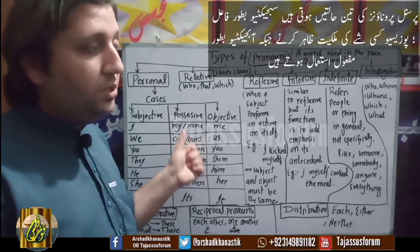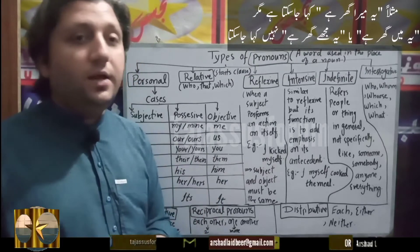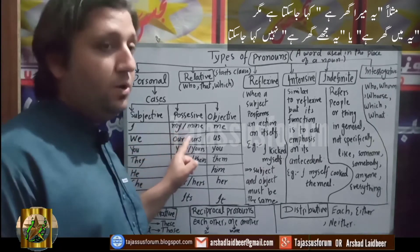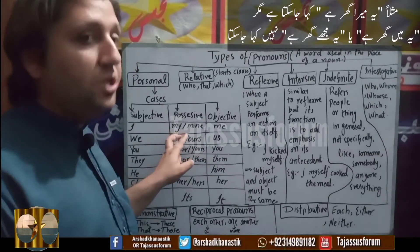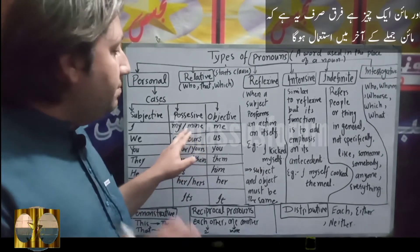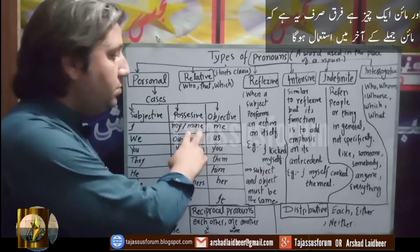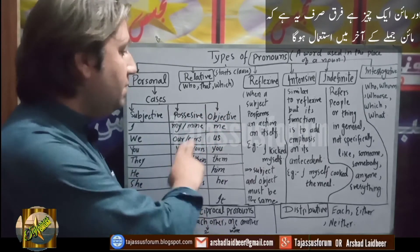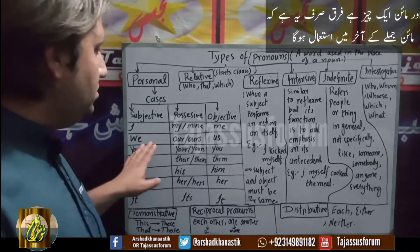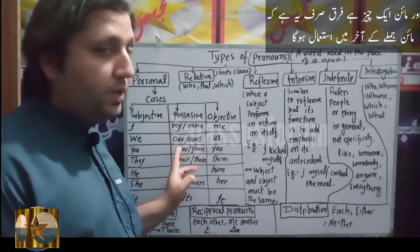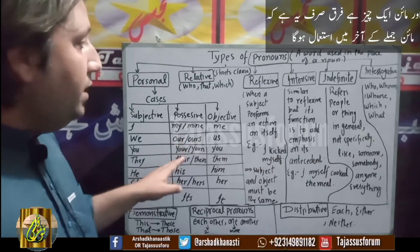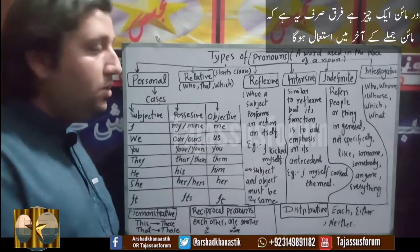The possessive case is used when you want to show ownership. For example, if I say 'this is my house', I can't say 'this is I house' — that would be wrong. Instead I say 'this is my house'. So when showing ownership, I use 'my'. I can also use 'mine'. My and mine are basically the same thing, but the difference is that 'mine' is often used at the end of a sentence. For example, 'this is my house' can also be spoken as 'this house is mine'. Similarly, the possessive cases for 'we' are 'our' and 'ours'. The difference between 'our' and 'ours' is the same as between 'my' and 'mine'. Whenever you use the possessive case of 'we' at the end of a sentence, you use 'ours'.